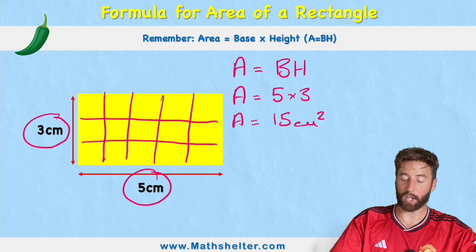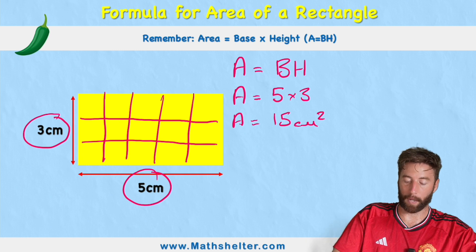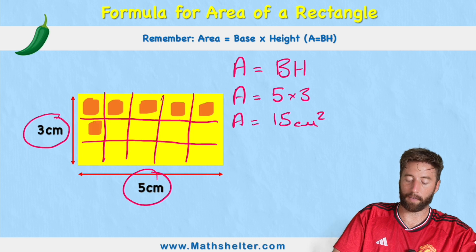And then when I measure area, essentially what we're doing is we're counting these squares. So 1, 2, 3, 4, 5, 6, 7, 8, 9, 10, 11, 12, 13, 14, 15.